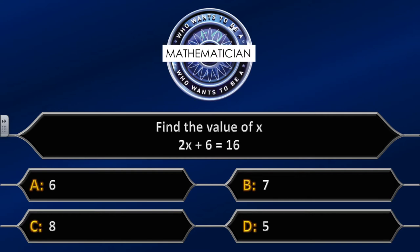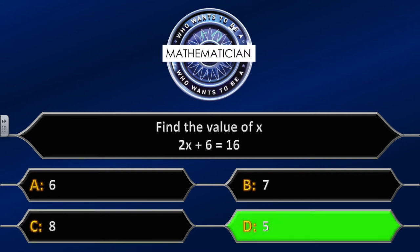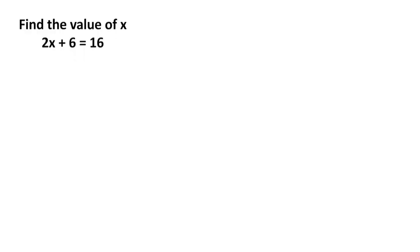The correct answer is D, five. For question two, find the value of x. We need to undo the equation using inverse operations — I'm going to minus six to cancel it down. Six minus six gives us zero, so that cancels. Whatever you do to one side of the equation, you must do to the other side to balance it out.